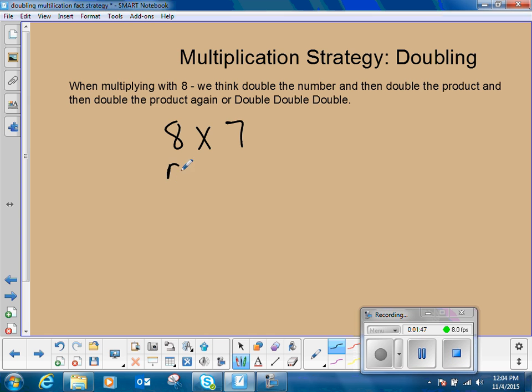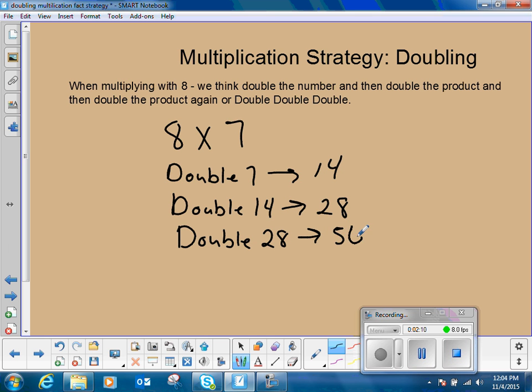This is what we think. We think double seven. That is 14. And then double 14. Now that is 28. And then we double 28. We get 56. So eight times seven is 56. That is the doubling strategy used for basic facts.